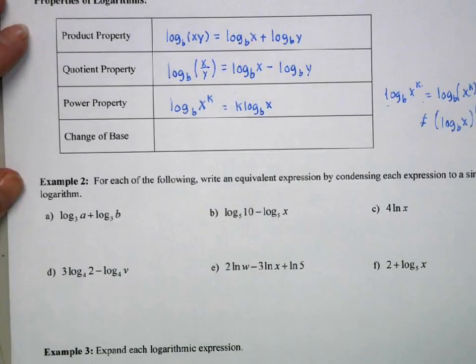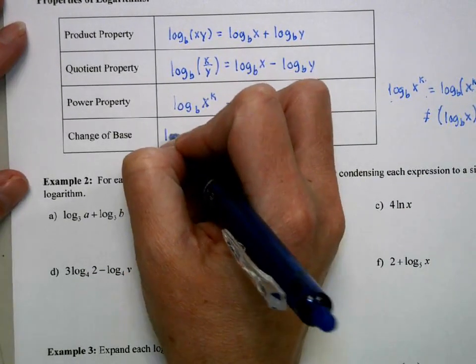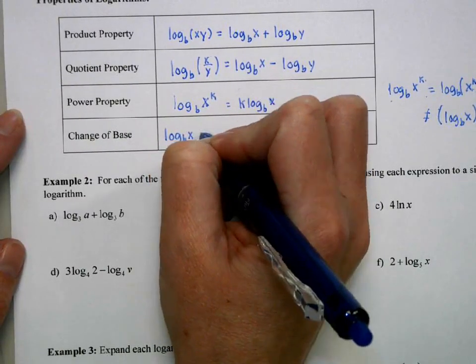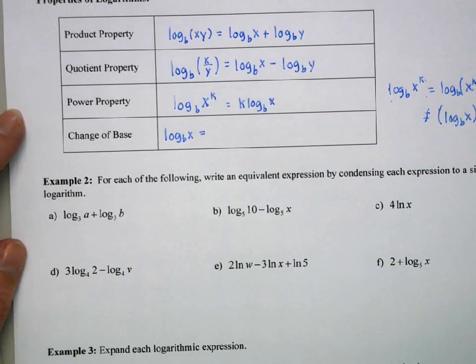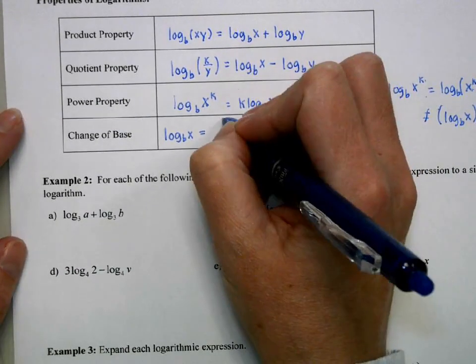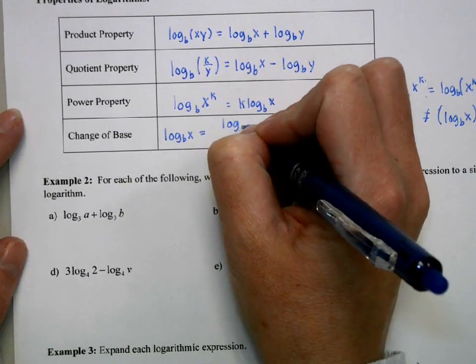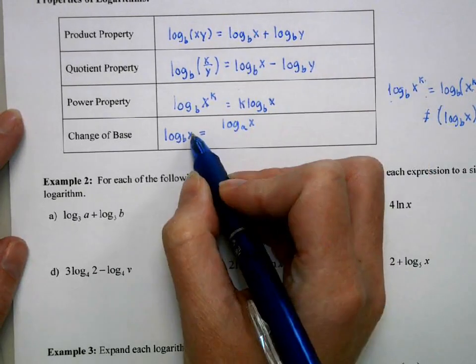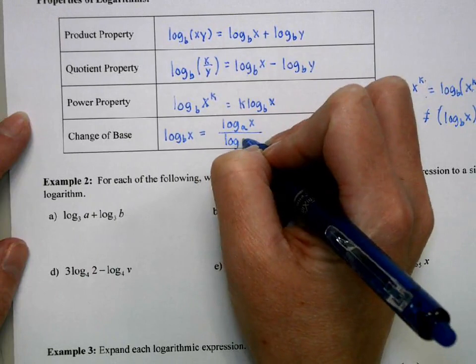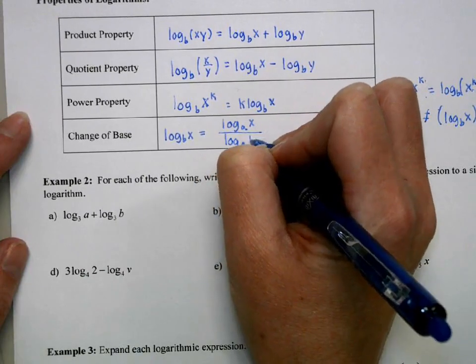The last property is the change of base property. Okay, so if I have log base b of x, we're going to introduce a new base, and I'm going to call my new base a, but it's going to be log base a of x, whatever goes here, over log base a of b.